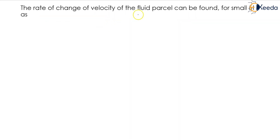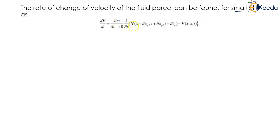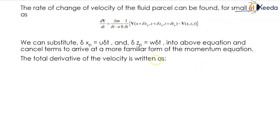The rate of change of velocity of the fluid parcel can be found for small Δt as dv/dt = limit as Δt tends to 0, (1/Δt) multiplied by v(x + Δx, z + Δz, t + Δt) minus v(x, z, t). We can substitute Δx_p = u·Δt and Δz_p = w·Δt into the above equation.